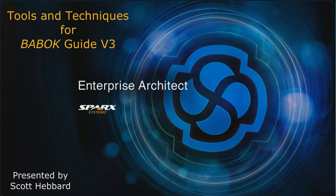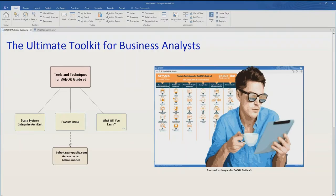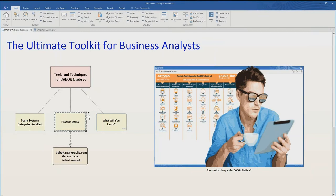In this webinar, I'm really excited because I get to introduce you to the ultimate BA toolkit — a new product called the Spark Systems Tools and Techniques for the BA Body of Knowledge Guide Version 3. Spark Systems, together with the International Institute of Business Analysis, has released this product. It's available for free and can be accessed via babock.sparkspublic.com with access code babock.model, all in lower case.